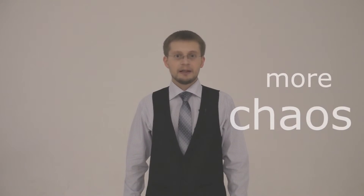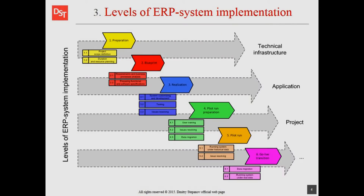There are a lot of persons involved in ERP system implementation, such as technical specialists, business consultants, managers, and others. The more people involved, the more chaos exists because of responsibility mixture. For instance, does a consultant have to be worried about deadlines, content approvals, and budget exceeding? The answer is related to ERP system implementation levels.